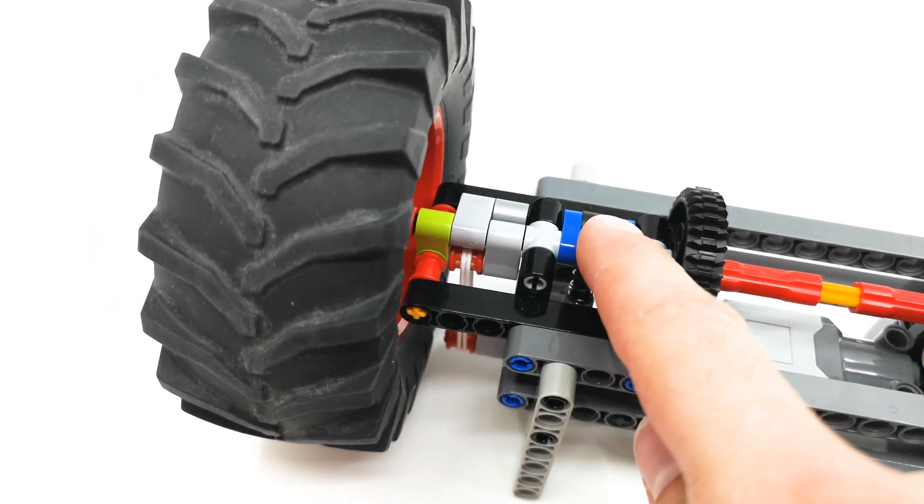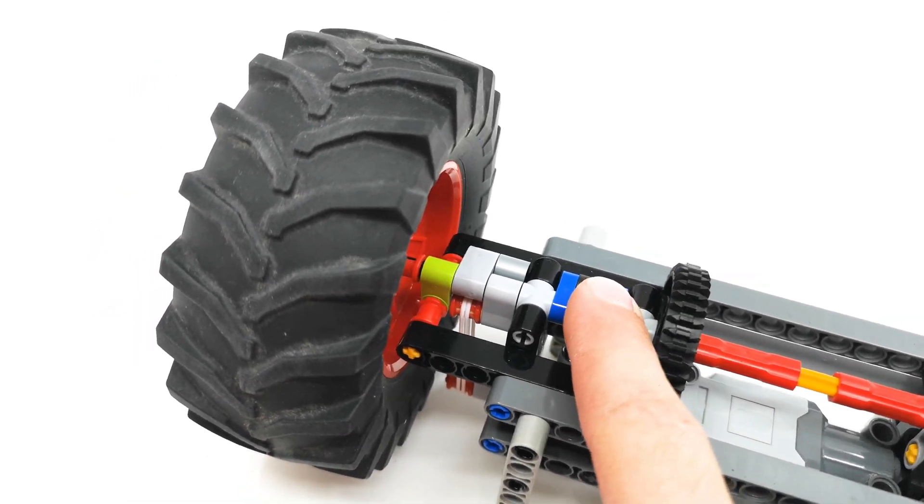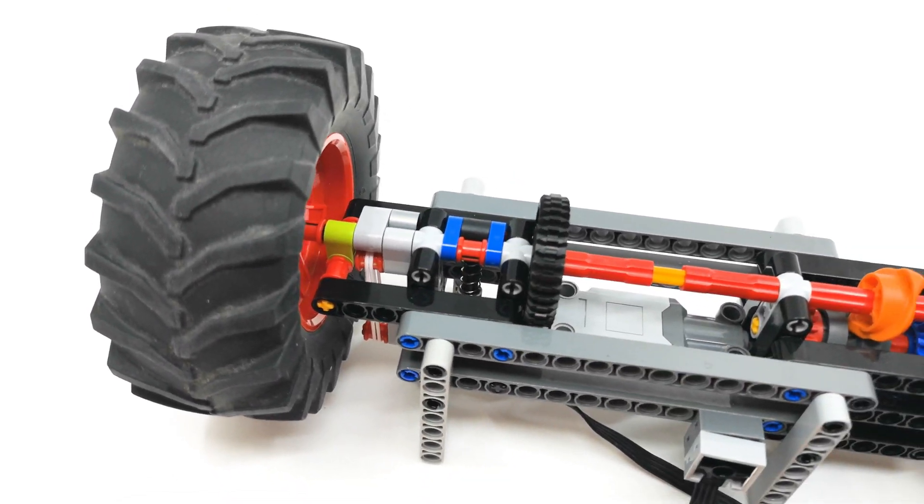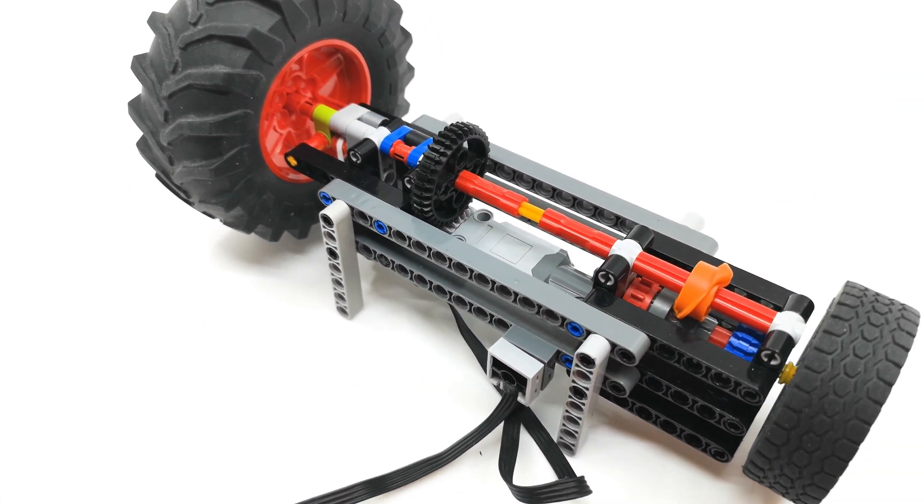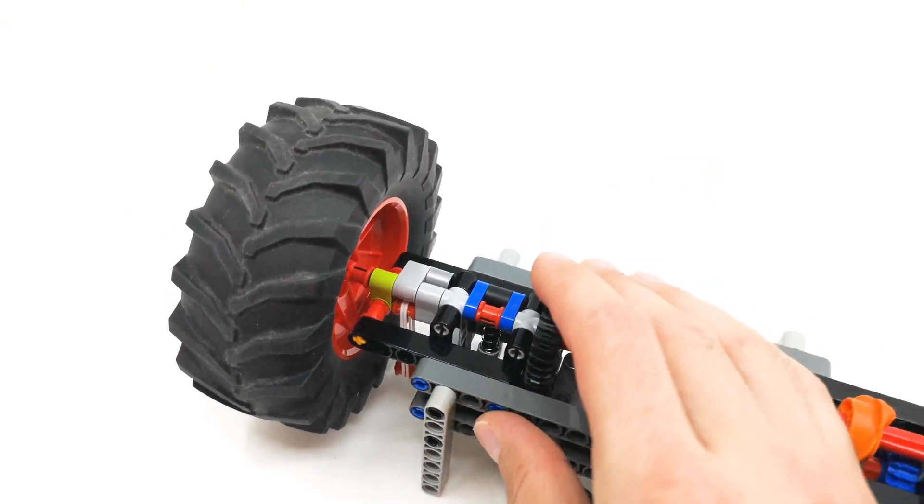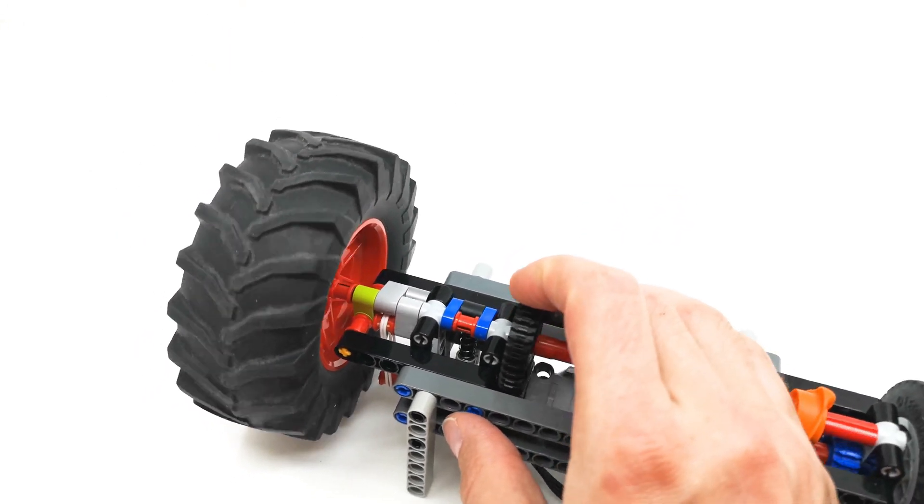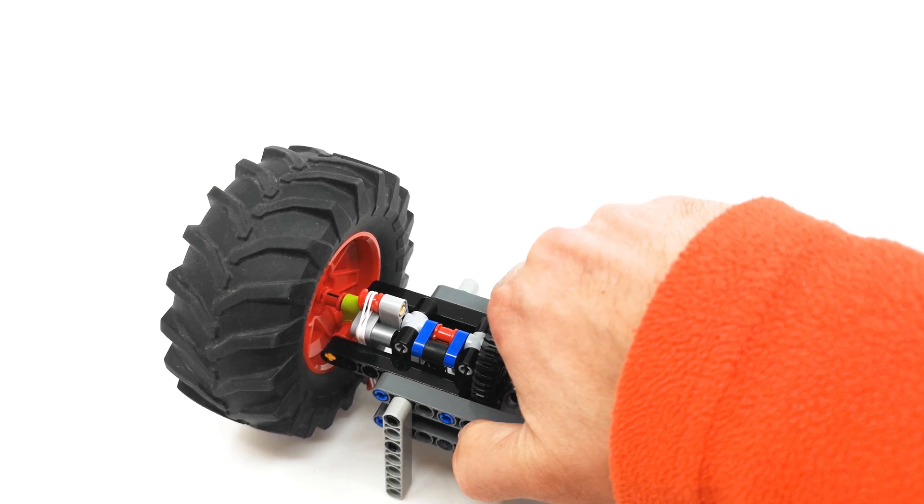The second thing is I'm using a shock absorber here. Now, this shock absorber gives the gearbox, the switching mechanism, bi-stable characteristics, so it's stable either in this position or in this position.